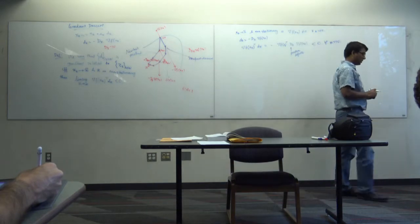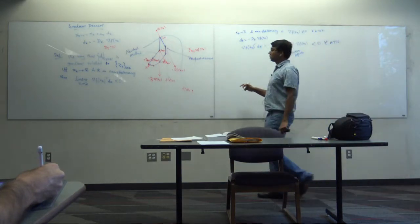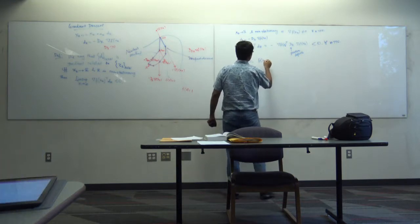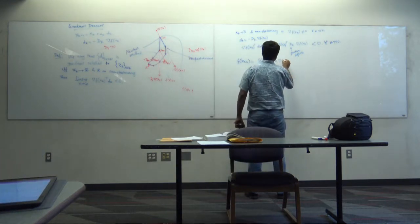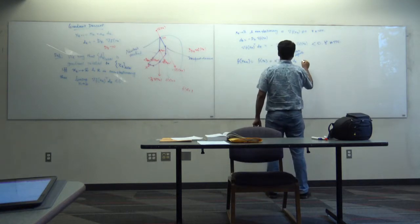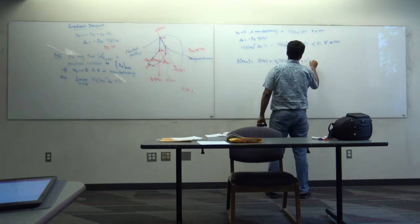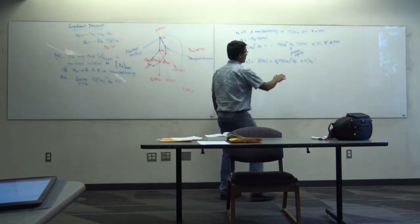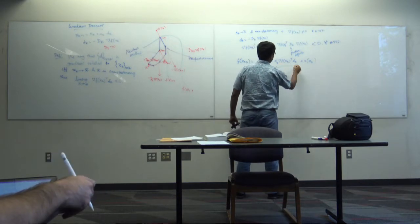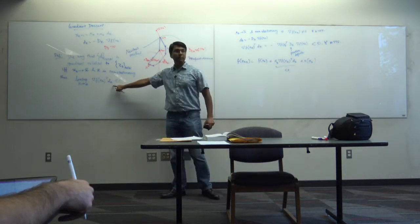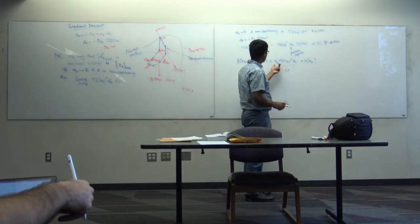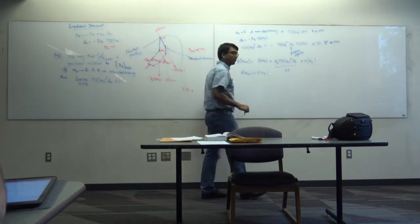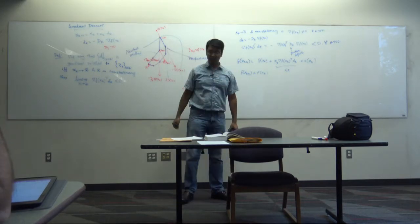What does the gradient related property give us? From the Taylor expansion: f(x_{k+1}) = f(x_k) + α_k ∇f(x_k)ᵀ d_k + o(α_k). The second term is negative by the gradient relatedness condition, and the last term is negligible for small α_k. So f(x_{k+1}) < f(x_k) — you are always descending.